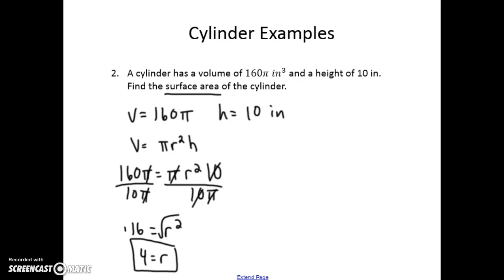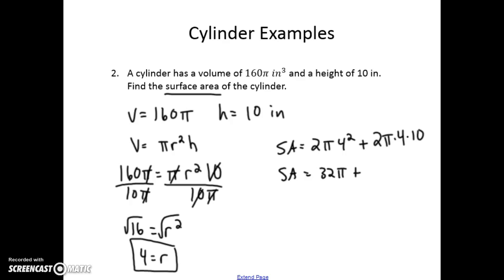Now we have all the information to find the surface area: 2πr² + 2πrh = 2π(16) + 2π(4)(10) = 32π + 80π = 112π units squared, or about 351.86 units squared.